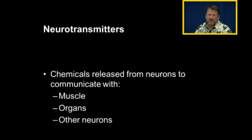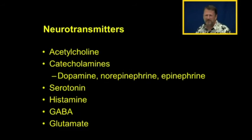So neurotransmitters are chemicals released from neurons to communicate with muscles, organs, and other neurons. And the neurotransmitters that we will talk about, not only today, but throughout cardiovascular pharmacology and central nervous system pharmacology, are these. These are the neurotransmitters we will talk about.